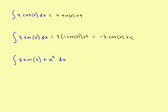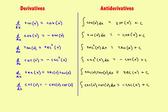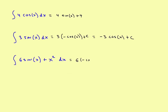Next, you can have combinations of trig and non-trig in the same problem. You've got the constant 6. The antiderivative of sine is negative cosine of x. Then plus — the antiderivative of x squared, using the power rule, is x cubed divided by 3. Tack on plus c for the entire thing. Moving the negative out front gives: negative 6 cosine of x plus one-third x cubed plus c.